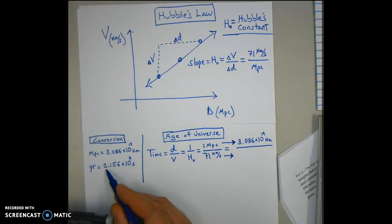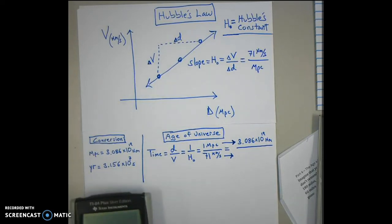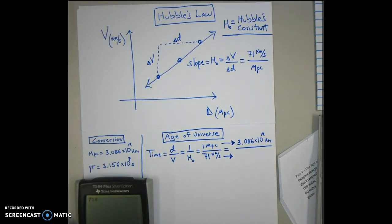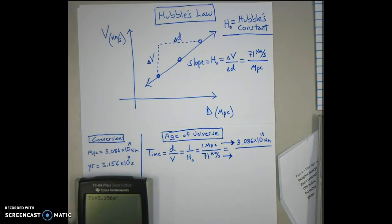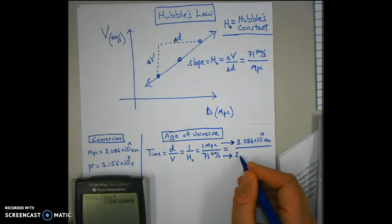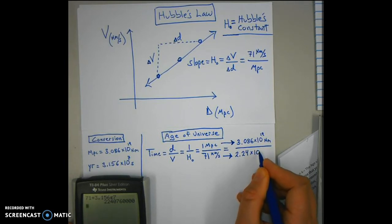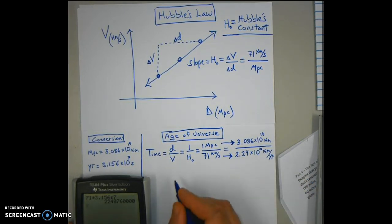By 3.156 times 10 to the 7th. So if we do that, we take 71 times 3.156 times 10 to the 7th. I get 2.24 times 10 to the 10th, and that will be a unit of kilometers per year. And now the age of the universe, the amount of time the universe has had to expand at this rate...